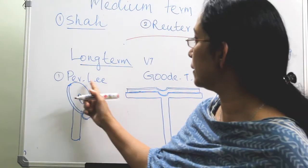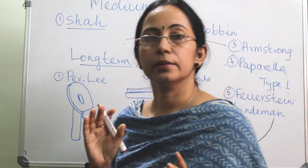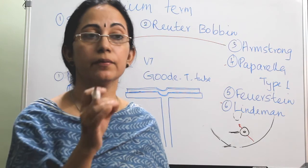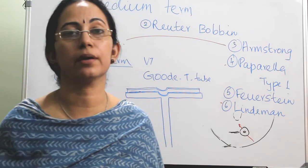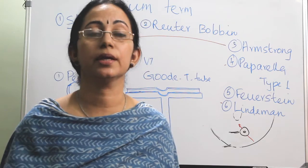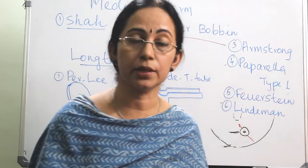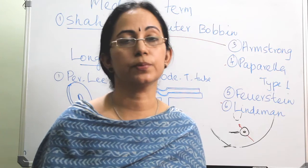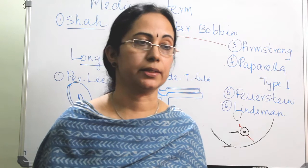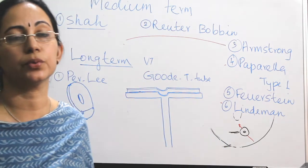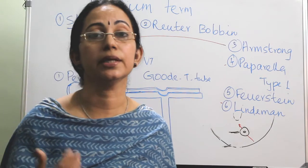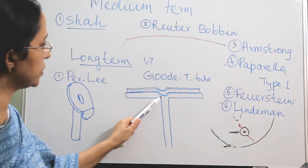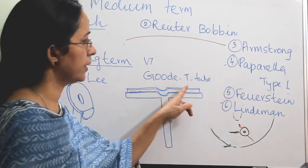Long-term ventilation tubes are mainly the Perlee tube and the Goody T-tube. Long-term tubes are indicated when there are recurrent attacks of secretory otitis media — whenever a tube is inserted and extrudes after 6 months to 1 year and the condition recurs. They are especially needed in children with cleft palate, permanent ciliary dysfunction of the Eustachian tube, Eustachian tube dysfunction related to cleft palate, or palatal palsy. In all these conditions, tubes that stay in the middle ear for years are required.